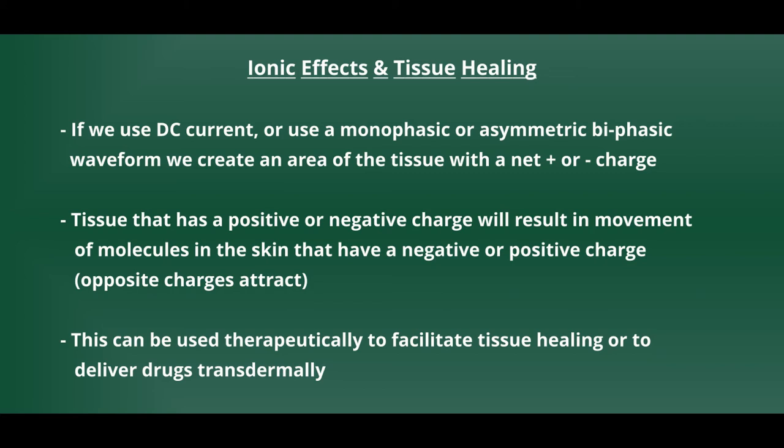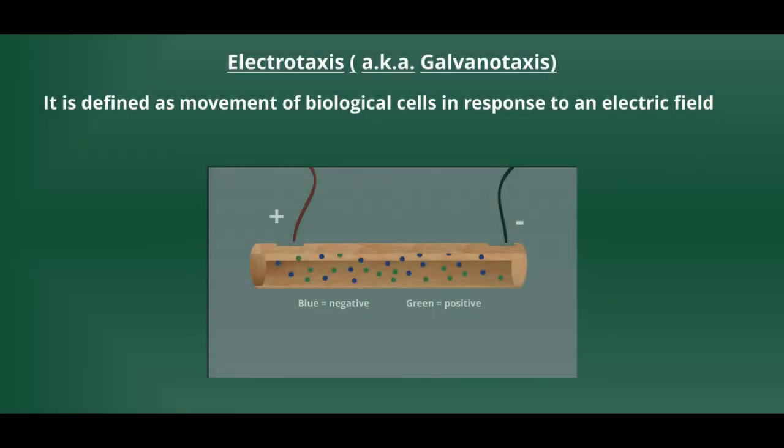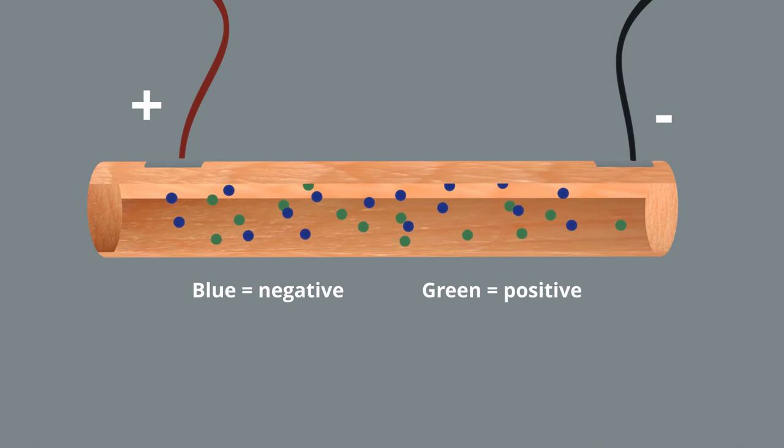If we're trying to facilitate tissue healing or reduce swelling, it's helpful to use electric current that has electrons flowing in one direction. This one-directional current flow can have a positive impact on some of our cellular processes. As current flows in one direction, we get a response referred to as electrotaxis. It is defined as the movement of biological cells in response to an electric field. So as the current is turned on, cells with an opposite charge will be attracted towards the electrodes.